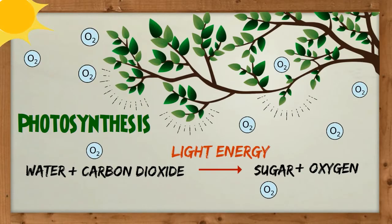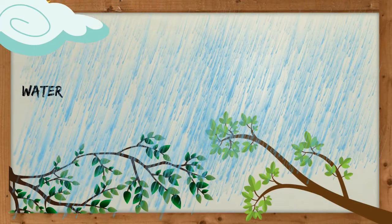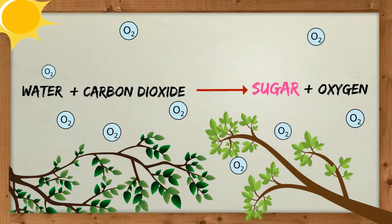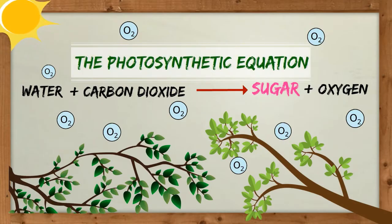Oxygen is released into the air. Water plus carbon dioxide gives sugar and oxygen. This is the photosynthetic equation.